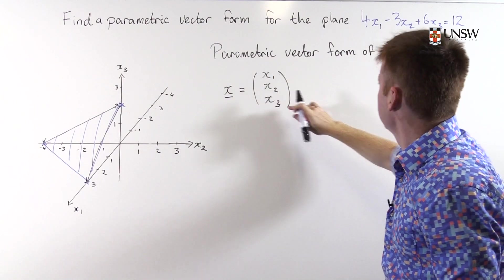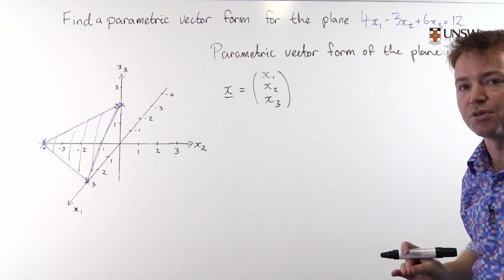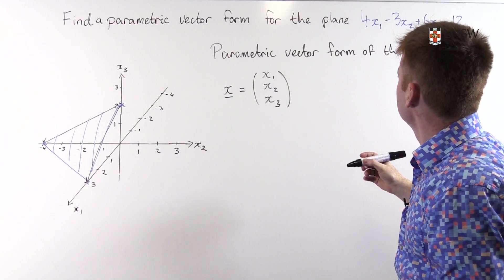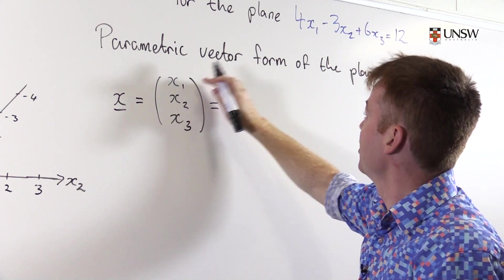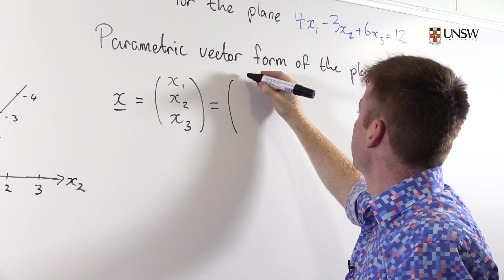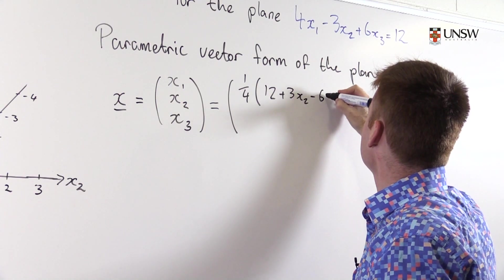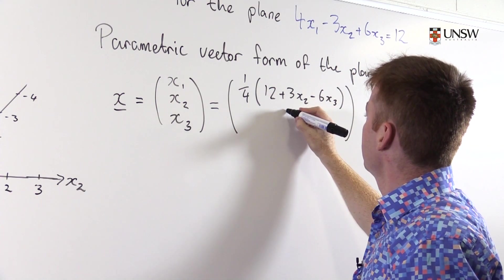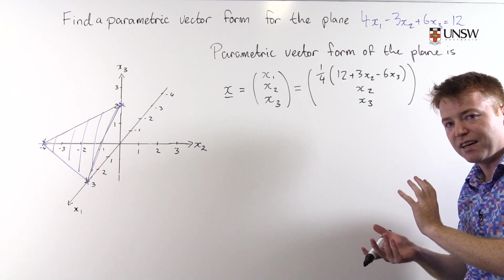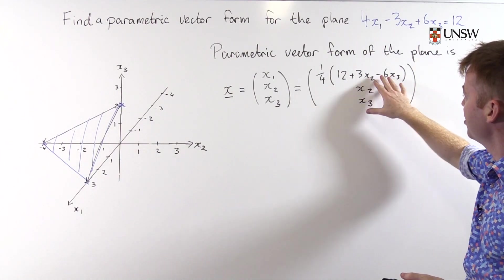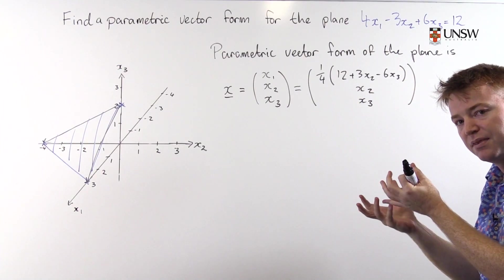And then you replace one of these symbols with one of those symbols from Cartesian form of the plane. You may not have all the symbols available to you but you have to choose one. I'm going to select x₁. And I will replace x₁ with its expression up here. So that's one quarter of (12 + 3x₂ - 6x₃). x₂ stays as x₂, x₃ stays as x₃. This kind of has the right feeling of parametric vector form. We've got some numbers but we've also got some x₂ and some x₃. We've got two degrees of freedom within this equation.